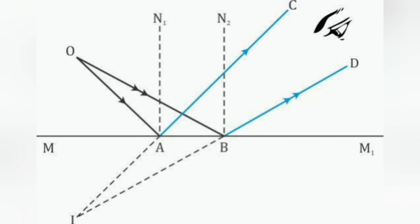To locate the position of image, the reflected rays AC and BD are produced backwards. They meet at the point I. Thus, I is the image of the object O.